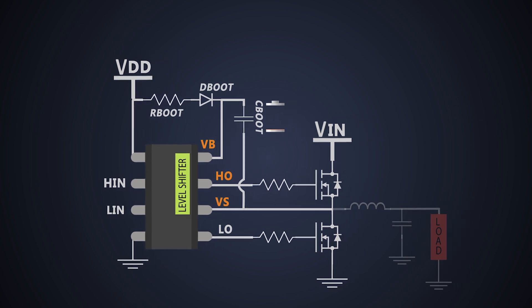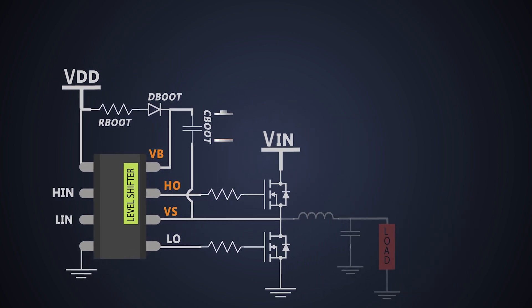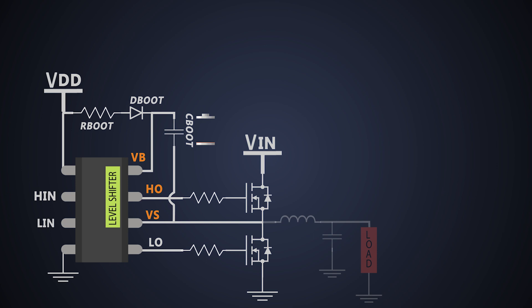Well, apart from having the advantage of being simple and low cost, this circuit has some limitations. We have to charge and discharge this bootstrap capacitor in every switching cycle. Because of that, the duty cycle and on time of the power electronics converter gets limited.